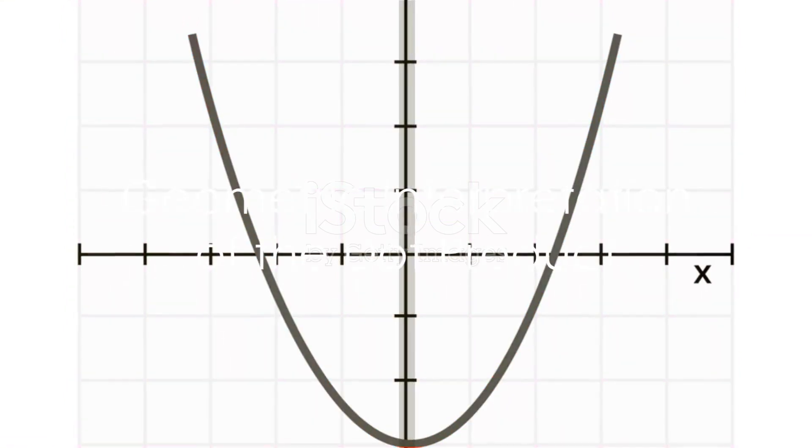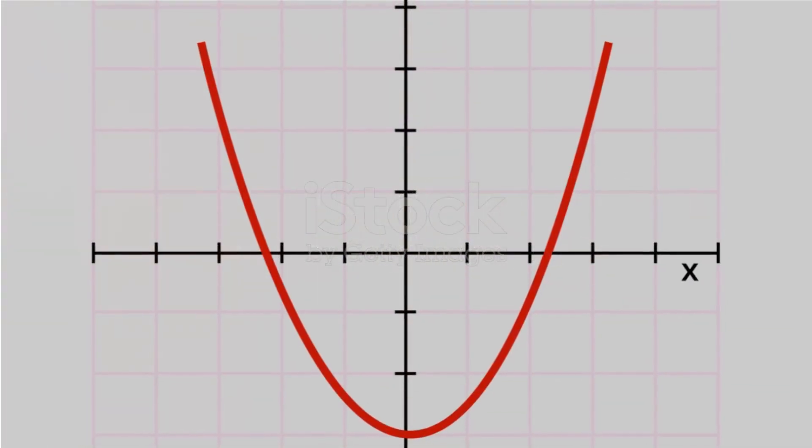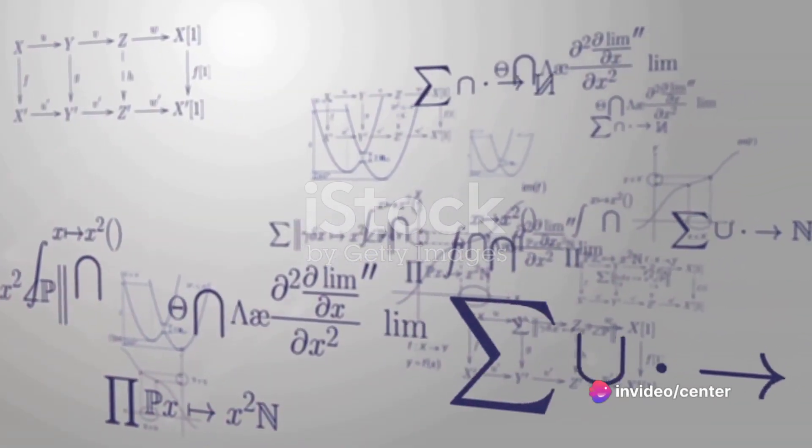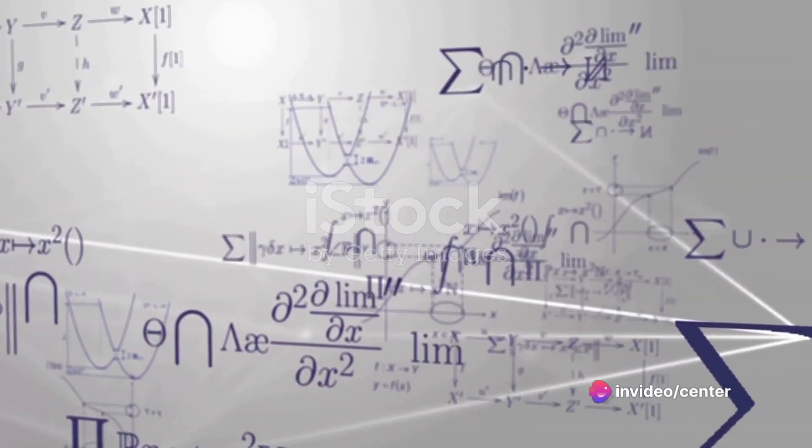There's another way to define the dot product, this time geometrically. In this case, A dot B equals the magnitude of A times the magnitude of B times the cosine of the angle between them.